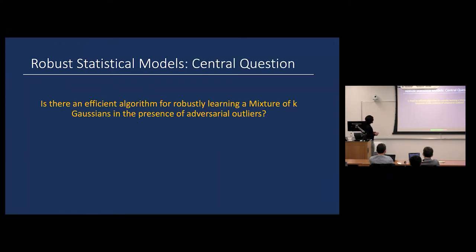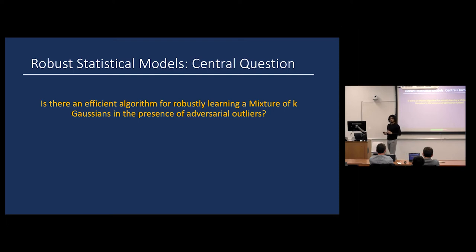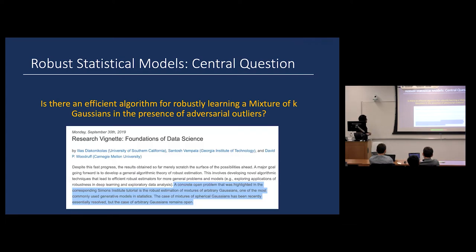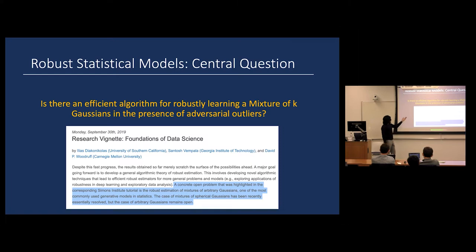Can we come up with polynomial time algorithms that do not grow exponentially in the dimension, especially in high-dimensional settings? The central question is: does there exist an efficient algorithm — where efficient means runtime doesn't grow exponentially with dimension — that robustly learns a mixture of k Gaussians in the presence of outliers? We were not the first to ask this question. I first heard it at the Simons Institute in fall 2018, during their program on foundations of data science, where it was highlighted as a main open question: can you learn a mixture of arbitrary Gaussians without assumptions on means and covariances, even with adversarial outliers?